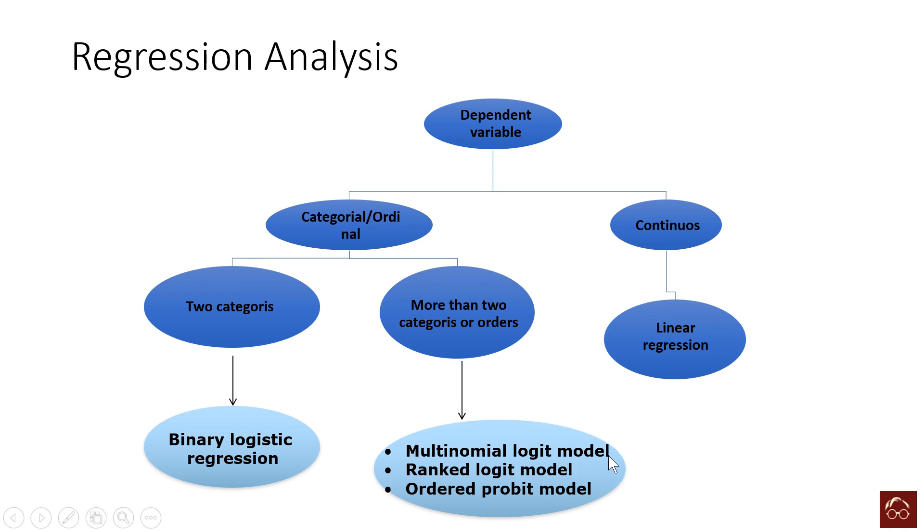If you have ranked orders in a dependent variable, you will go for ranked logit model. And you can also go for ordered probit model and ordered logit model if you have ordered variables—your dependent variable is ordered but not continuous. So what do I mean by ordered?